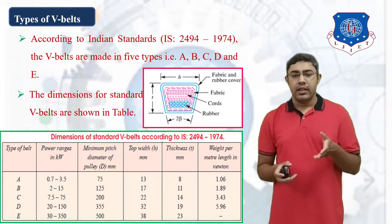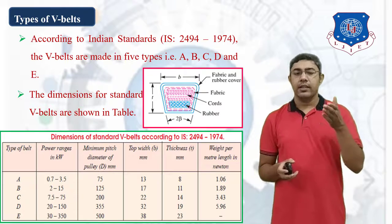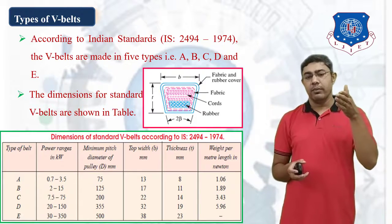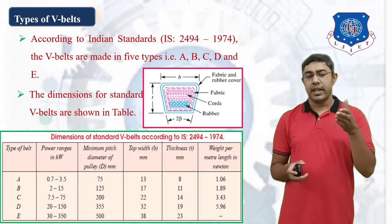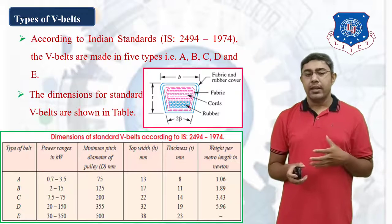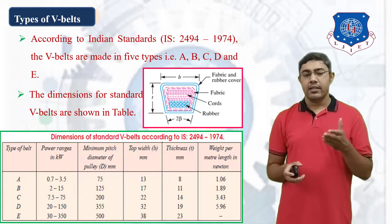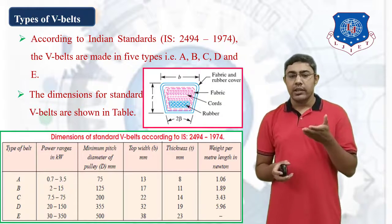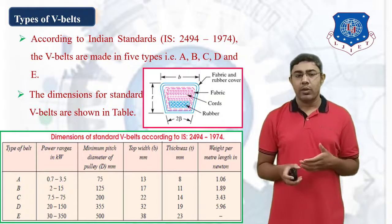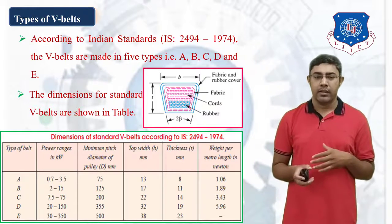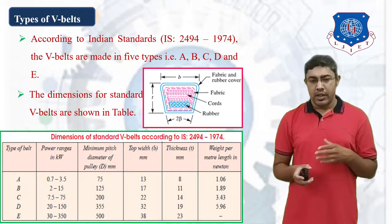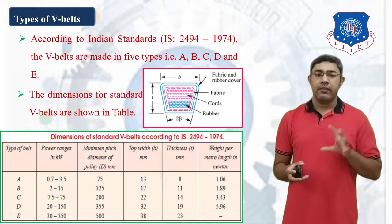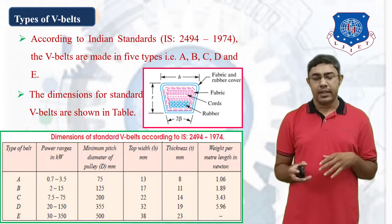Looking from type A to E, the power ranges increase. Type E shows a power range of 30 to 350 kilowatts. These are the 5 types for V-Belt.